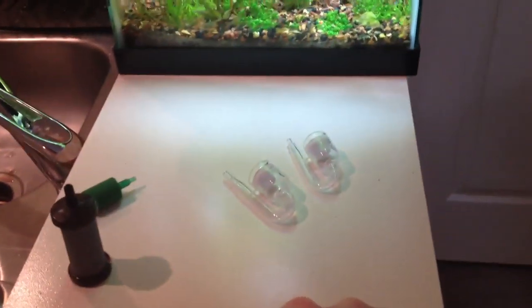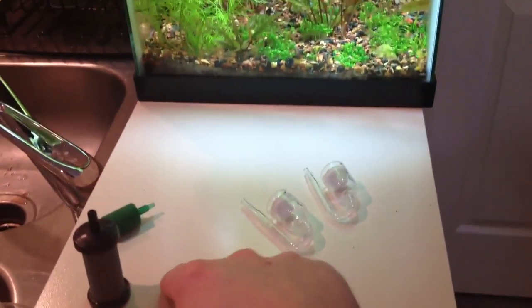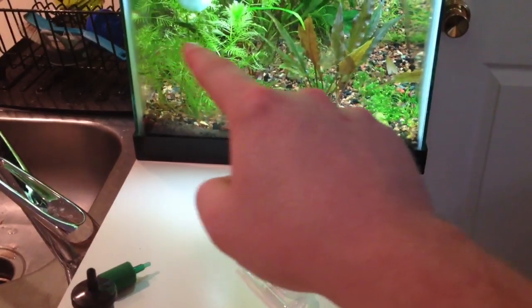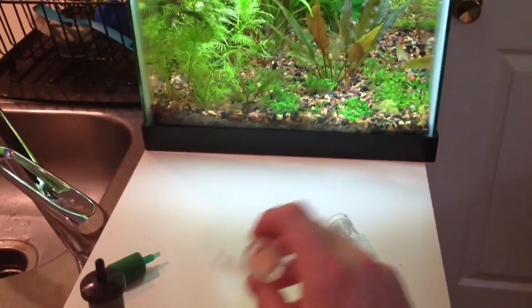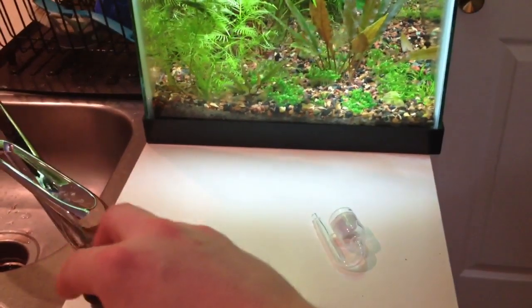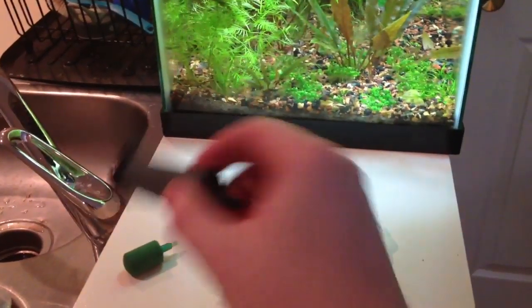Now with a bubble ladder, you have many large bubbles again, but they're traveling very slowly up through the aquarium water. So you have a lot of time for the bubbles to touch the water and therefore have more CO2 disperse into the aquarium than you would with an air stone.